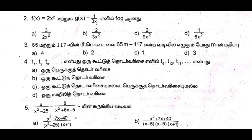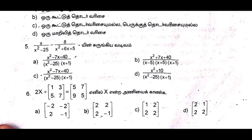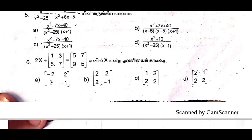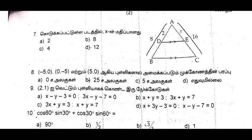The 4th one is B option. Arithmetic progression. The 5th one is C option — x squared. The 6th one is B option. The 7th one — 2 minus 1 — C option.